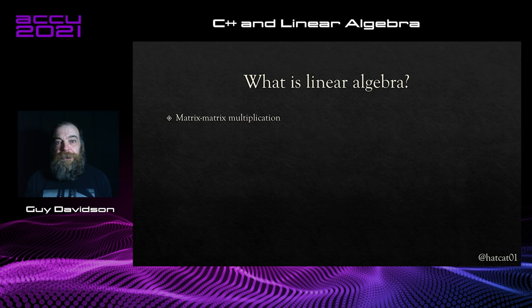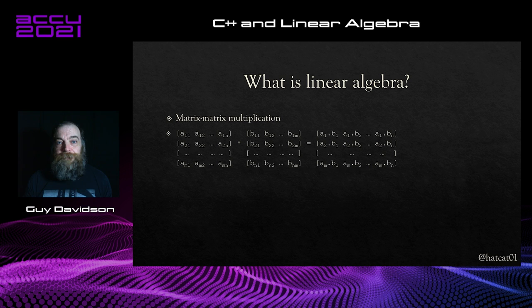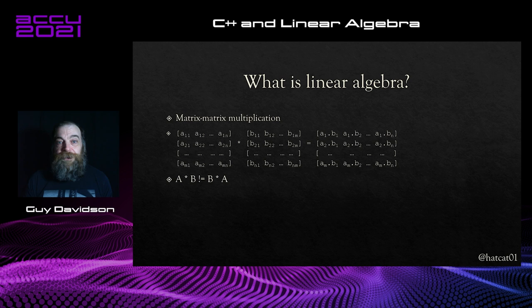As well as scalar multiplication, there is matrix multiplication. This is constrained by requiring that the number of columns in the left operand match the number of rows in the right operand. It's performed by calculating the dot product of every row and column combination, retrieving the row from the left-hand operand and the column from the right-hand operand. The dot product is itself a sort of linear equation — it is the sum of the member-wise products of the elements. Since we're taking rows from one operand and columns from the other, matrix multiplication is not necessarily commutative.